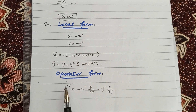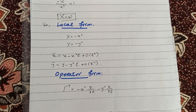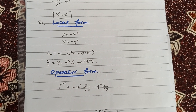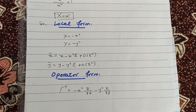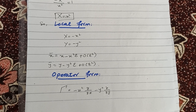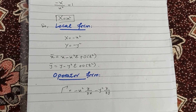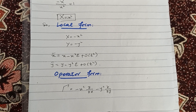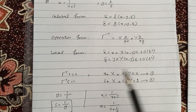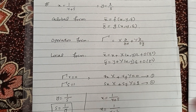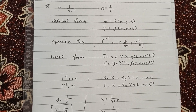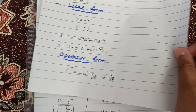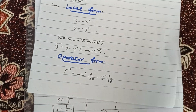The operator form is given by γ = X·(∂/∂x) + Y·(∂/∂y). Substituting the values of capital X and capital Y, we get the operator form of the Lie group.